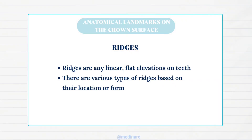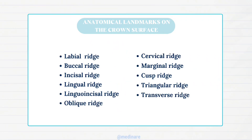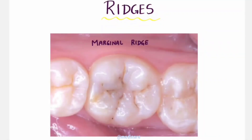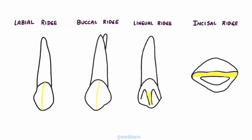Ridges are linear flat elevations on the teeth, with various types based on their location or form: labial ridge, buccal ridge, incisal ridge, lingual ridge, linguo-incisal ridge, oblique ridge, cervical ridge, marginal ridge, cusp ridge, triangular ridge, and transverse ridge. The marginal ridge is the linear rounded border of enamel forming the mesial and distal border of the occlusal surface of posterior teeth. The labial ridge runs cervico-incisally at the center of the labial surface of canines, extending from the cusp tip to the cervical region.